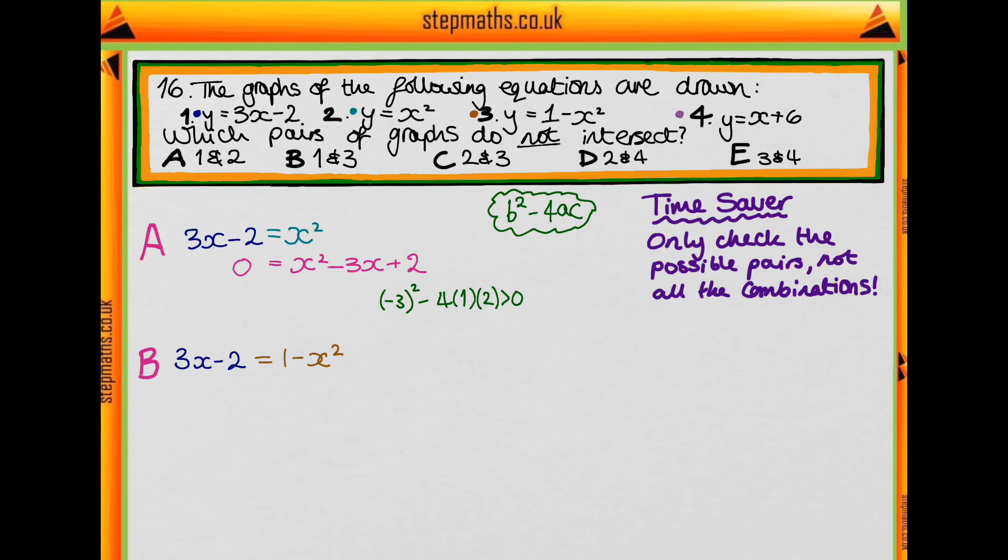For B, we do the same thing with the first and third graphs. When we work this out, we get that it's also greater than zero, so we can rule out B. Why don't you pause the video and have a go at doing this for C?